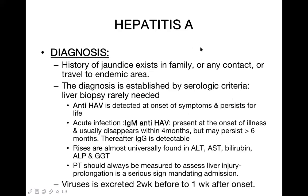To diagnose hepatitis A, take a good history and perform physical examination and investigations. Take a history of jaundice in the family because this is a communicable disease and multiple family members may be affected. Also ask about travel history. The diagnosis is established by serological criteria — we don't usually do liver biopsy in acute illness.